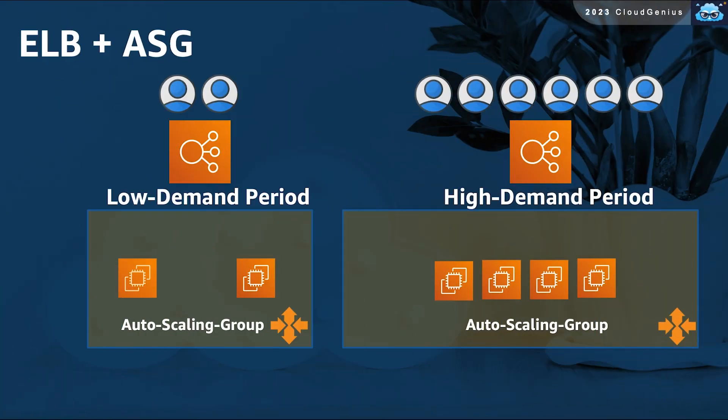As previously mentioned, as a common practice in the cloud, we complement the functionality of the ELB with a back-end group of servers forming an ASG that scales dynamically with changes in demand. This represents an elastic architecture that ensures traffic is properly distributed across all available resources, regardless of how many there are.